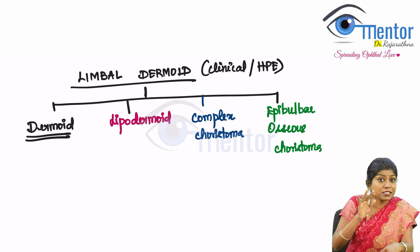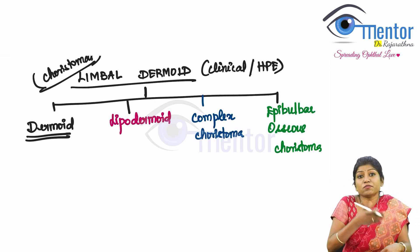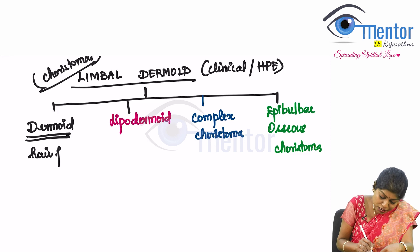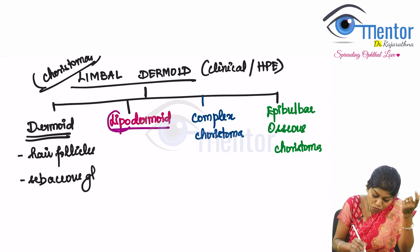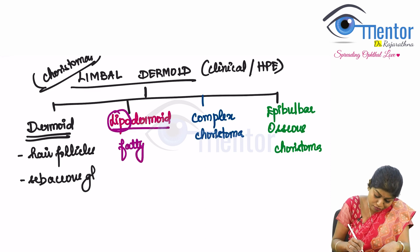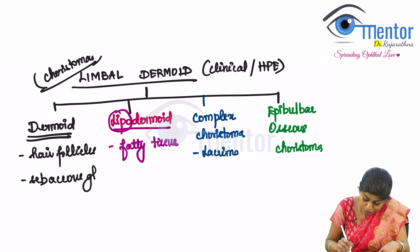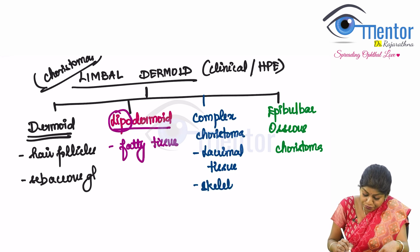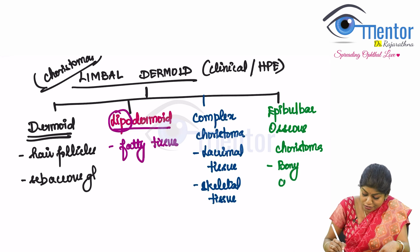Dermoid is a choristoma, and so are all four types. Dermoid is where you have other tissues like hair follicles and sebaceous glands in that little mass. Lipodermoid, as the word says, has more fatty adipose tissue. Complex choristoma is more complex — it has lacrimal tissue and some skeletal tissue. Epibulbar osseous choristoma, as the name says, has a bony component.